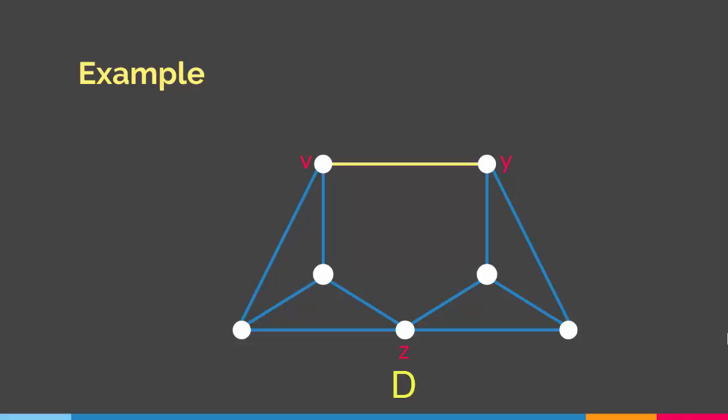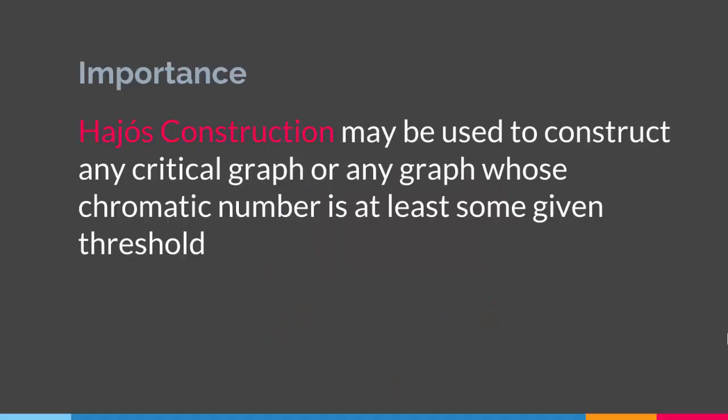Besides being an important binary operation, Hajos Construction is also important in constructing critical graphs, or any graph whose chromatic number is at least some given threshold. We will talk more about critical graphs and chromatic numbers in later chapters on graph labeling and graph coloring.